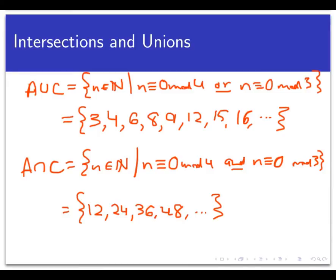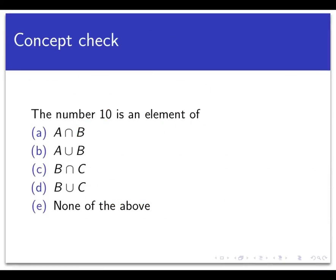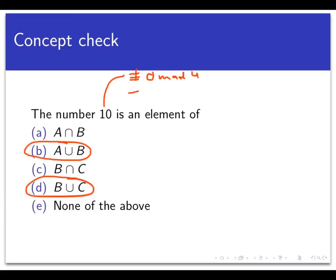Let's do a concept check. The number 10 is an element of which of these sets? Recall that set B is the set of all integers congruent to 0 mod 2. Pause and select all answers that apply — there could be more than one. Now, 10 is not congruent to 0 mod 4 — it's actually congruent to 2 mod 4. It's also not congruent to 0 mod 3 — it's congruent to 1 mod 3. But it is congruent to 0 mod 2, since any even number is congruent to 0 mod 2.